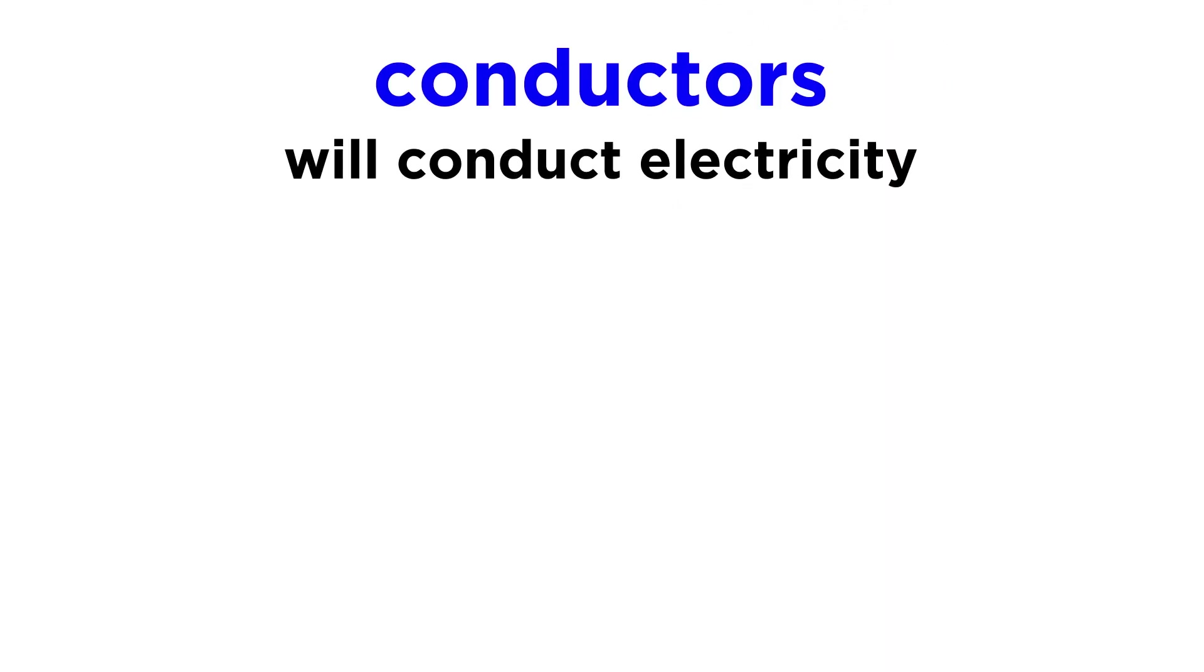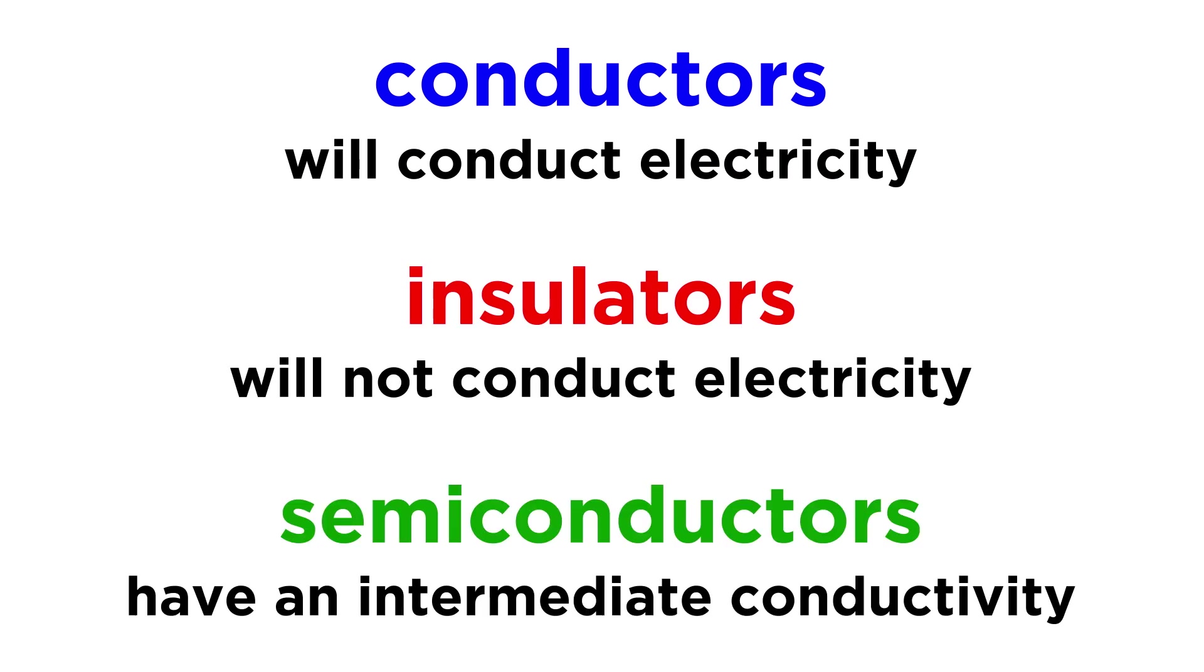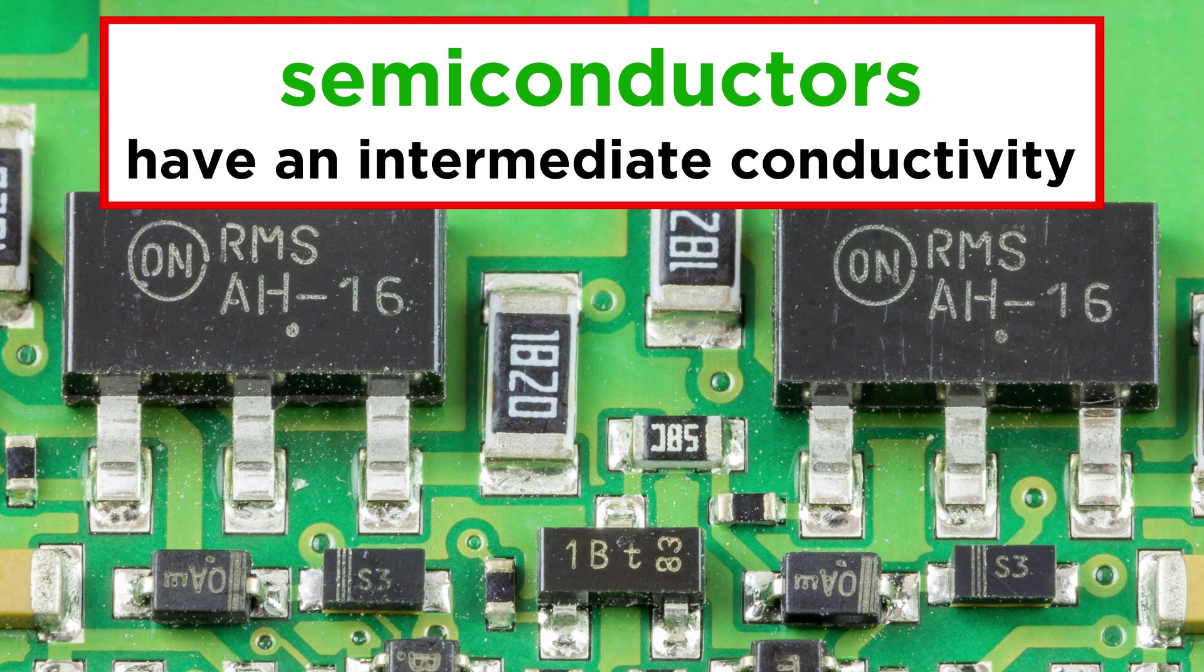So as we said, conductors conduct electricity and insulators do not, while semiconductors are materials that have a conductivity in between that of a conductor and an insulator. Because of this intermediate conductivity, semiconductors can be controlled and used for technological purposes.